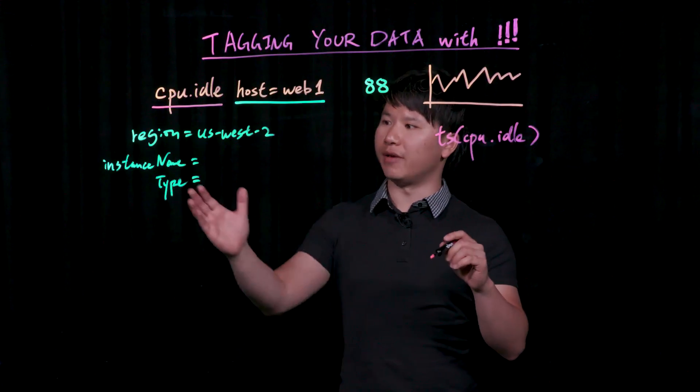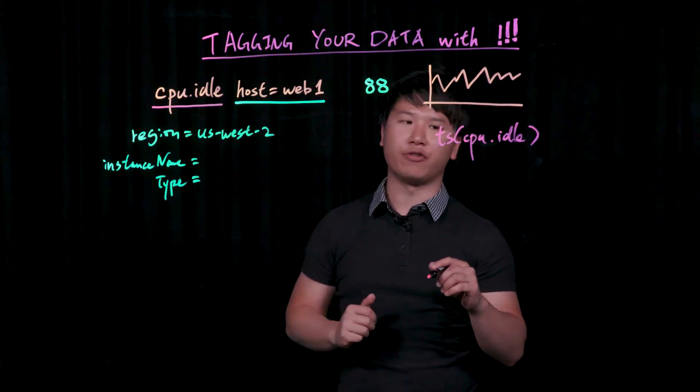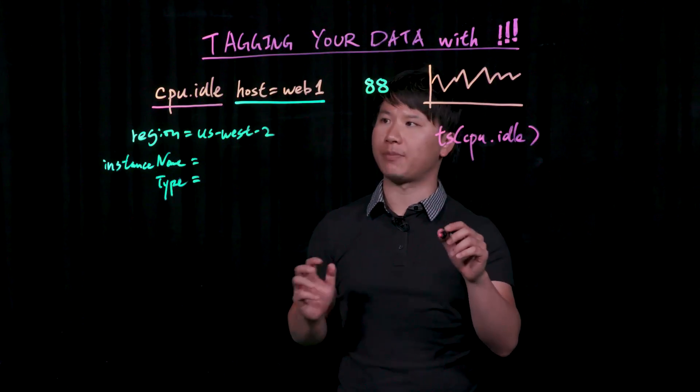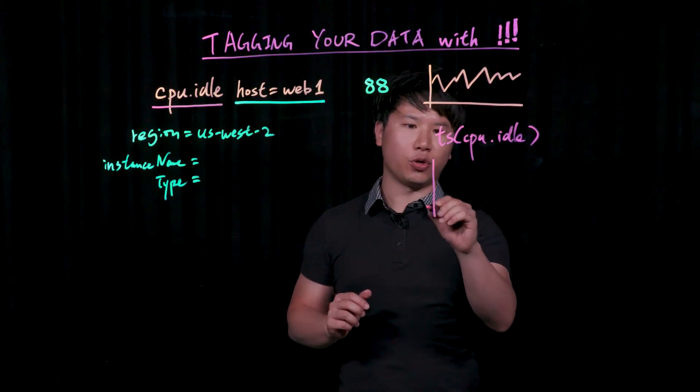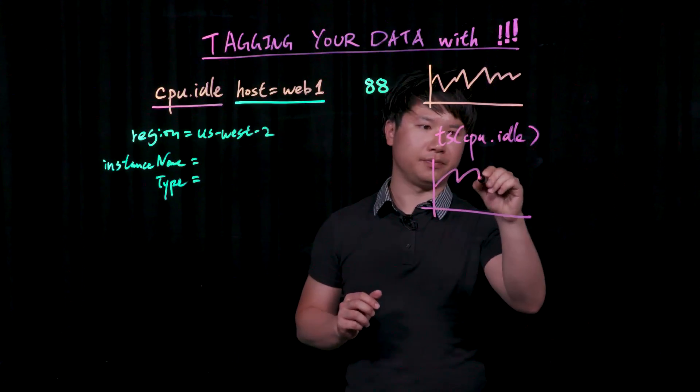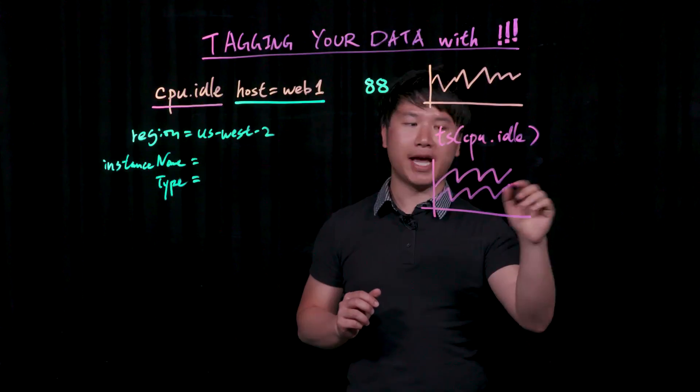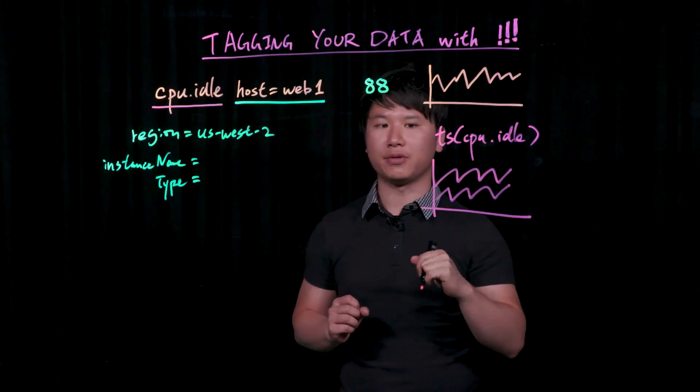So, for example, if you happen to have CPU idle information from just two machines, but they happen to be in two separate regions, they would show up as two lines in the system. And all of the tag information is available when you hover your mouse over it.